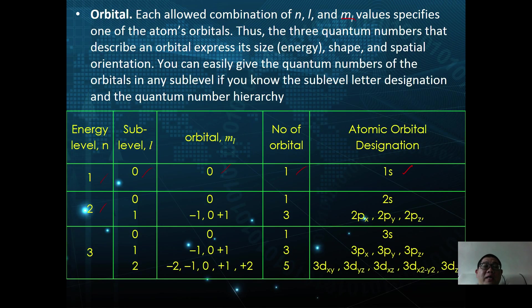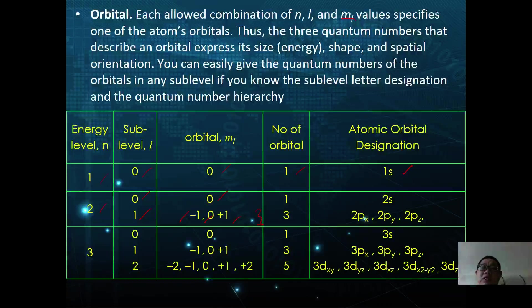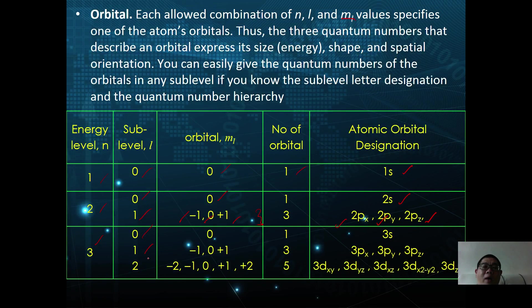For energy level n equals 2, the second shell has two sub-levels, l equals 0 and l equals 1. l equals 0 has one orientation (ml = 0), while l equals 1 has three orientations (ml = minus 1, 0, and plus 1), giving a total of four orbitals. In terms of atomic orbital designations, these are 2s, 2px, 2py, and 2pz.